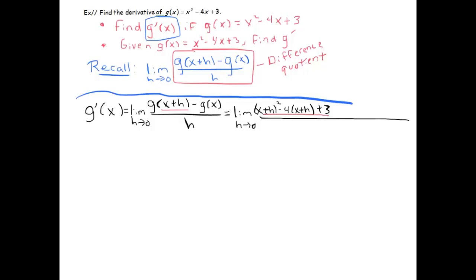That, underlined in red, is g(x+h). Now I'm going to subtract g(x), which is x² - 4x + 3. You've got to be really careful here. Put that in parentheses: x² - 4x + 3, divided by h. This g(x) in blue is just this here.